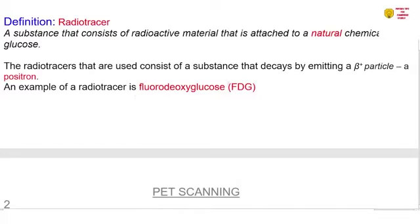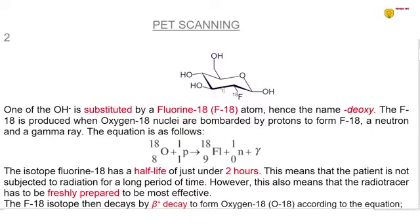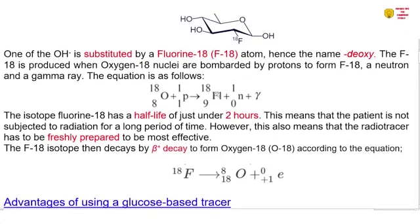Now the structure of fluorodeoxyglucose is shown here. As you can see, the whole structure is like glucose but then one of the OH- has been removed and substituted by a fluorine atom, hence the name deoxy. The F18, which is the fluorine-18 in that molecule, is produced when oxygen-18 nuclei are bombarded by protons to form the F18 isotope. A neutron and a gamma ray are also formed in the process. The equation is as follows. So we've got the oxygen-18 here and then it's going to be bombarded by a proton to produce the fluorine-18, a neutron and a gamma ray.